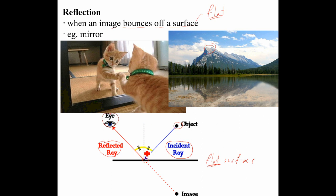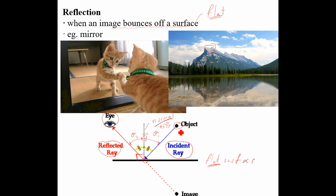For a flat surface, we can also talk about angles. The dashed line is at right angles — perpendicular — to the surface, and it's called the normal line. The angle of the incident ray to the normal line is theta one. For reflection off a perfectly flat surface, theta two — the angle of the reflected ray — is exactly the same. So if the incident ray is 45 degrees, the reflected ray is also 45 degrees.